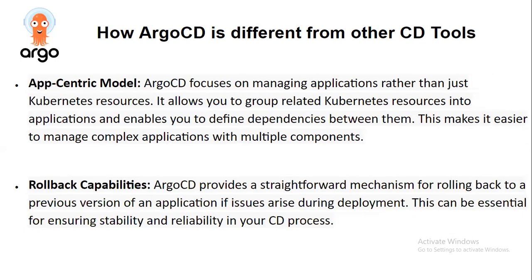Next is the app-centric model. Argo CD allows you to group related Kubernetes resources into applications and enables you to define dependencies between them. This makes it easier to manage complex applications with multiple components. Argo CD focuses on managing applications rather than just individual Kubernetes resources.